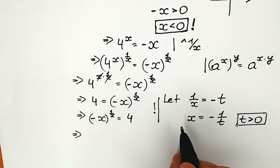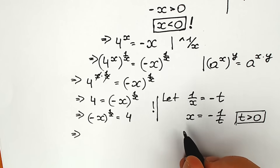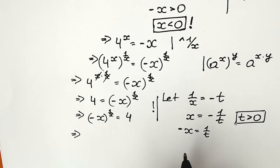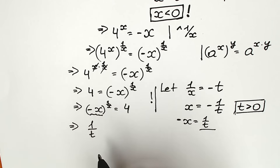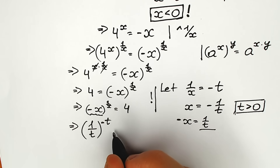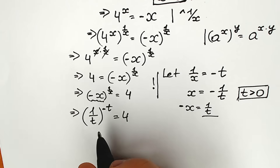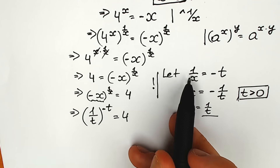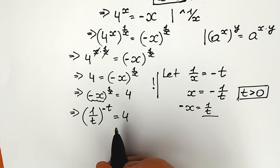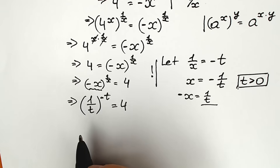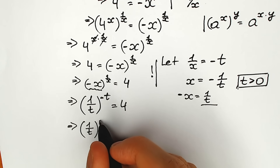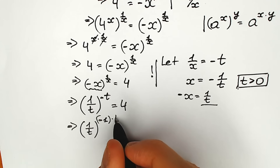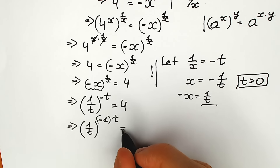We have minus x, but minus x equals 1 over t. Substituting, we put 1 over t inside the parenthesis, and outside we have the exponent 1 over x, which equals minus t. So we get 1 over t, raised to the power minus t, equals 4. Instead of minus t I'll write it as minus 1 times t — this changes nothing, we still have minus t as our power.